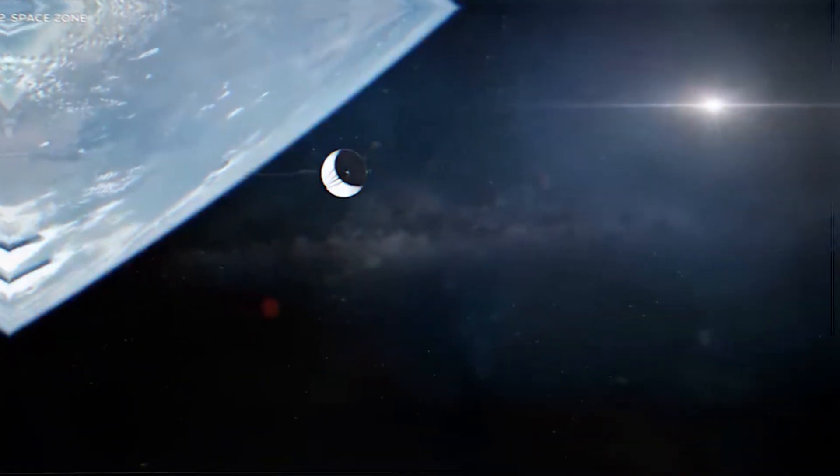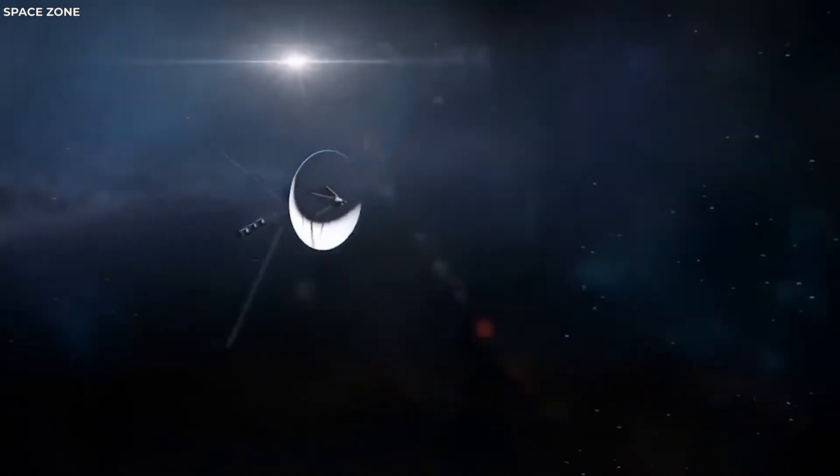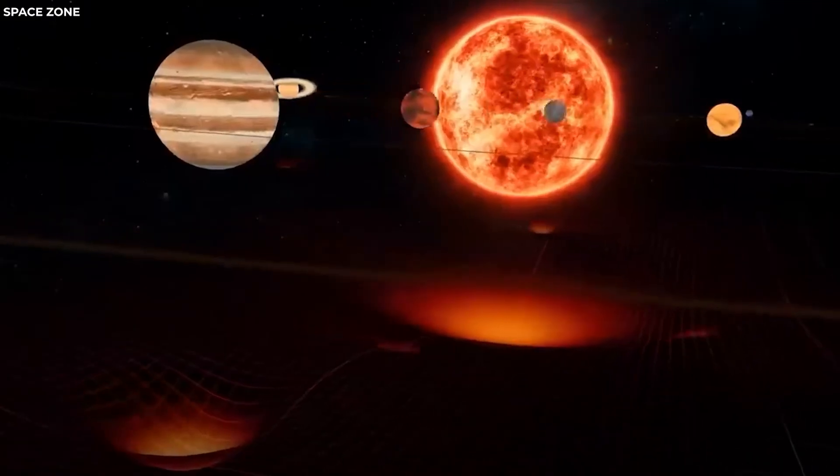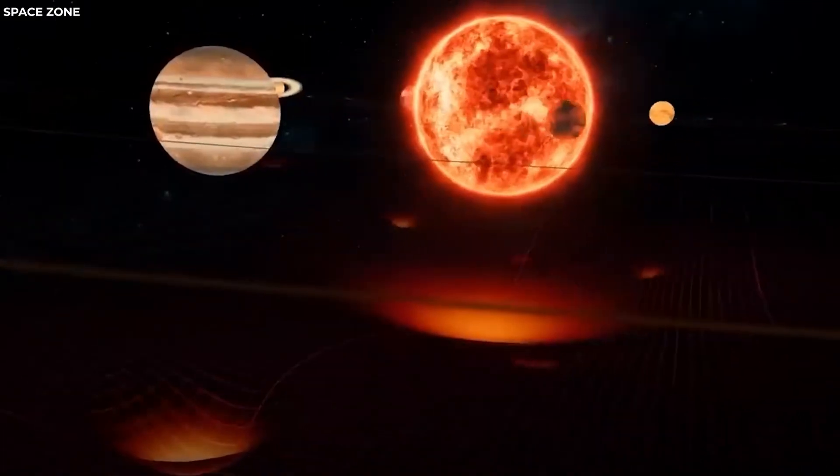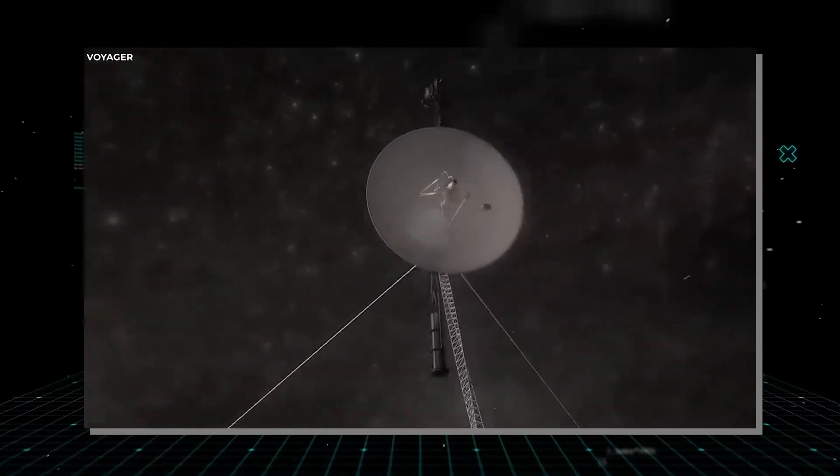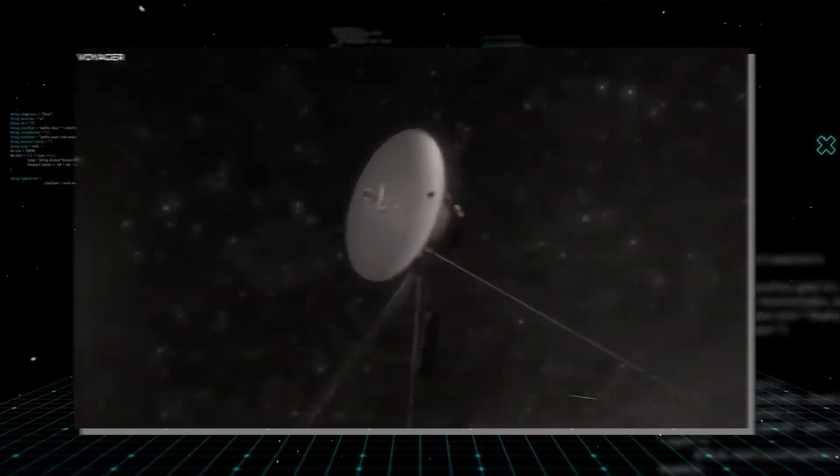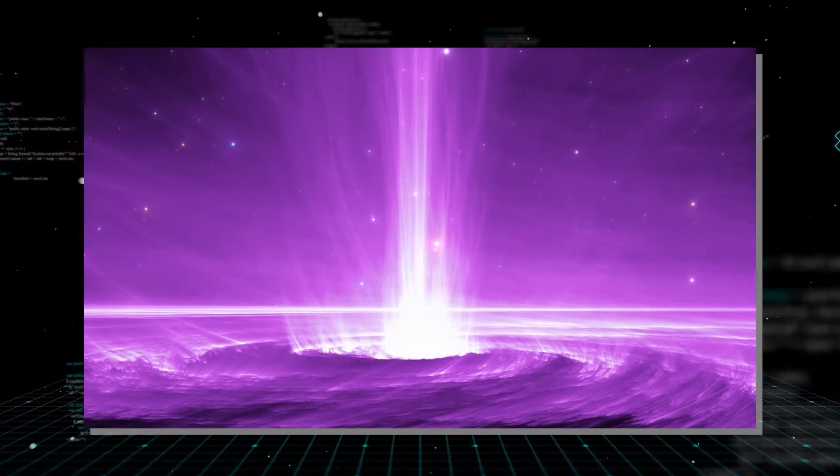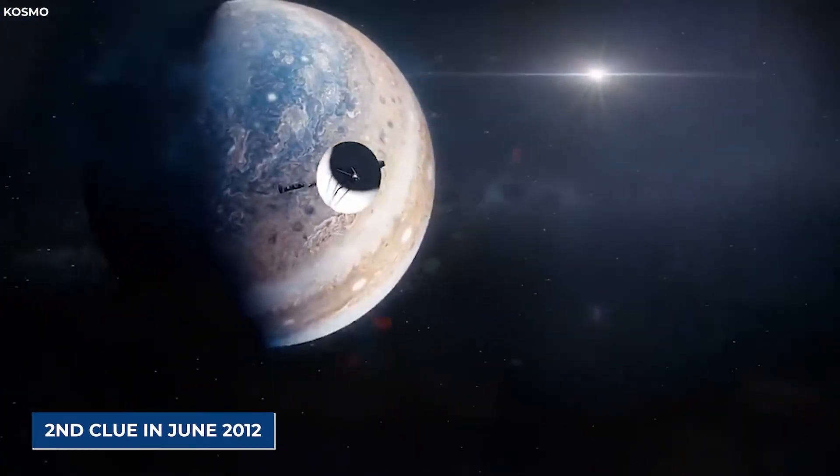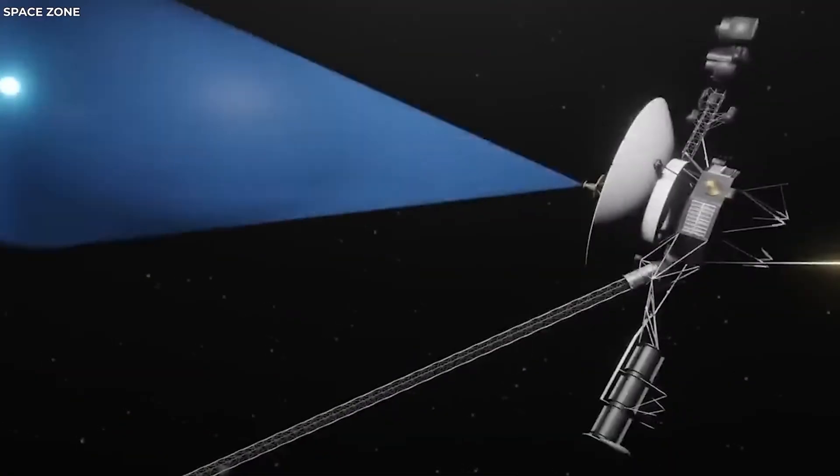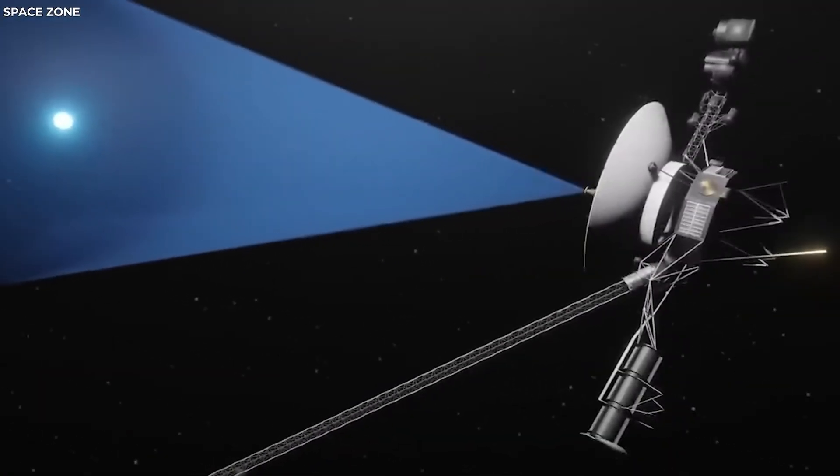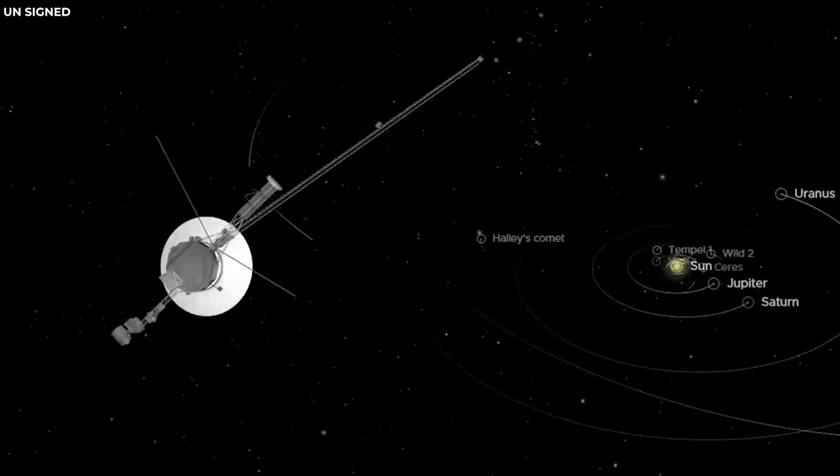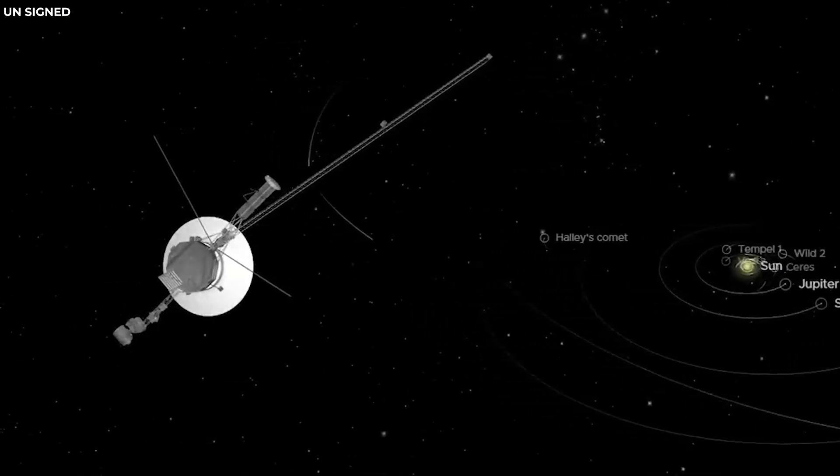The first clue that Voyager 1 was approaching interstellar space came in May 2012, when it detected a sudden increase in cosmic rays, which are high-energy particles from outside the solar system. This suggested that Voyager 1 was leaving the protection of the heliosphere and entering a region where cosmic rays were more abundant. The second clue came in June 2012, when Voyager 1 detected a decrease in solar wind particles.